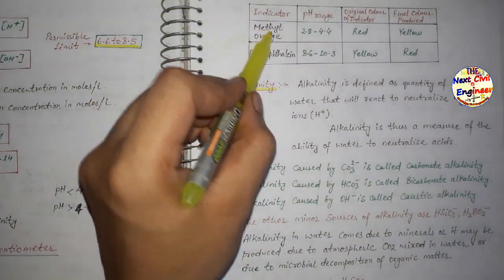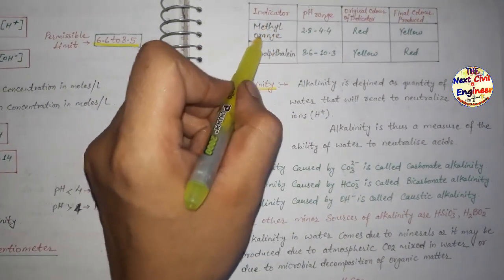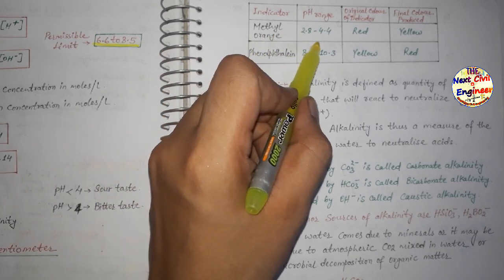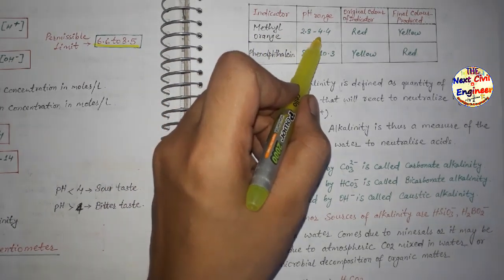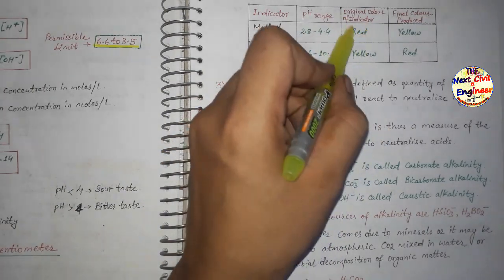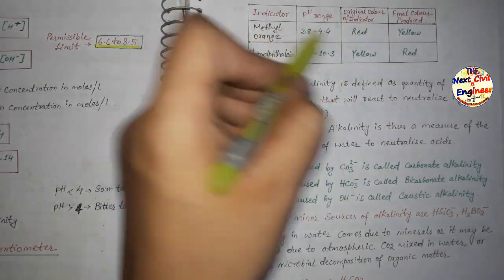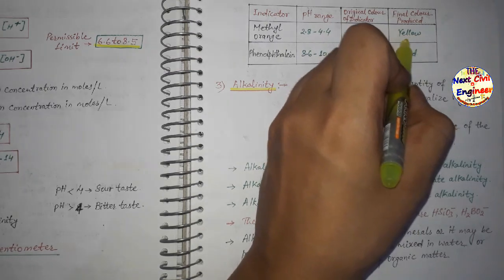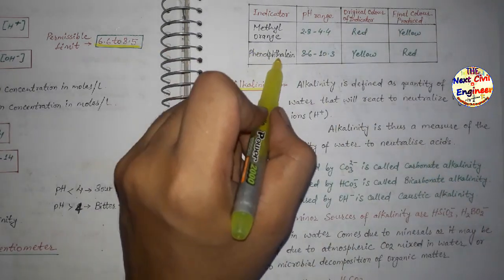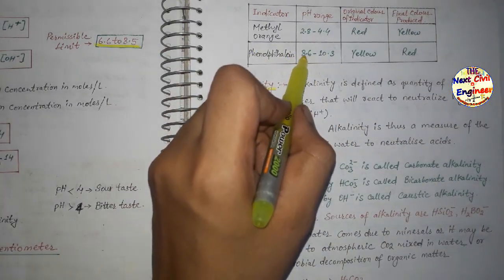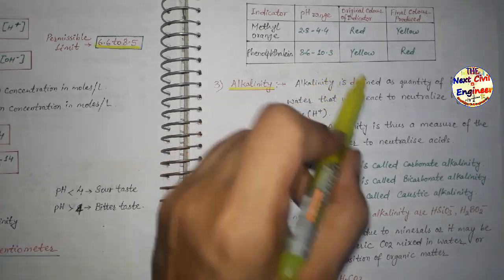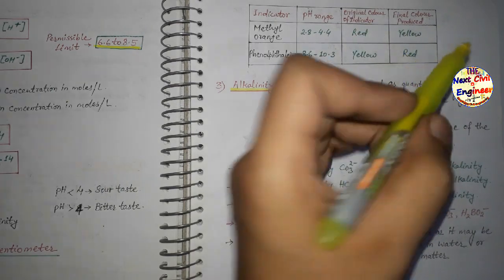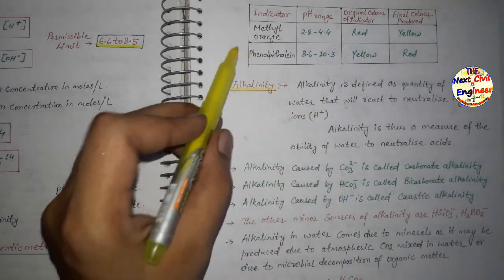Note down: methyl orange indicator has a pH range of 2.8 to 4.4. Its original color is red and the final color produced is yellow. Phenolphthalein indicator works in the pH range of 8.6 to 10.3. Its original color is yellow and the final color produced is red.